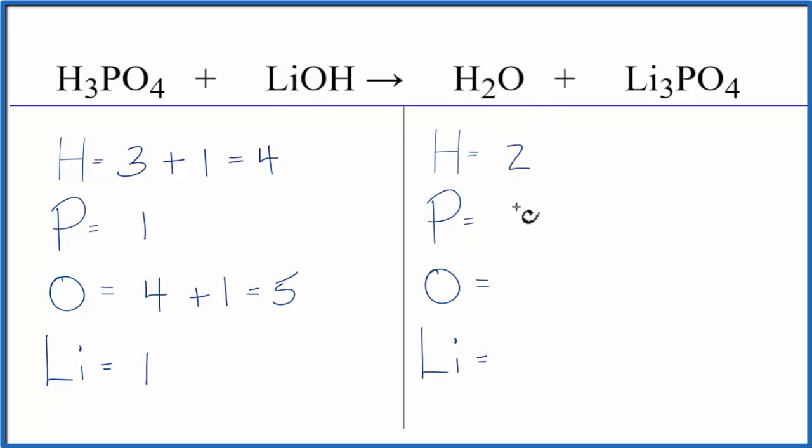On the product side, we have two hydrogens, one phosphorus, one oxygen, four oxygens here, so a total of five, and then three lithium atoms.